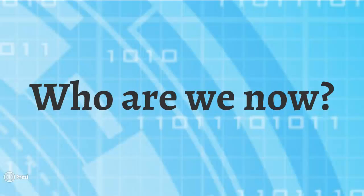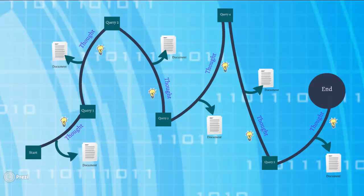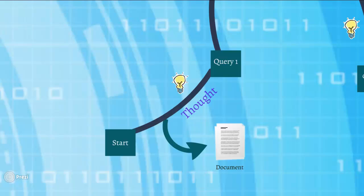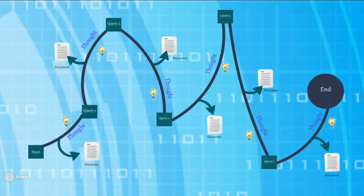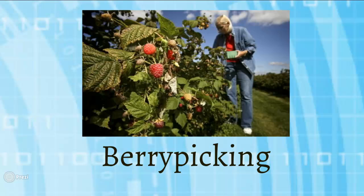So if that's who I thought we were, who are we now? I'm going to turn to Bates again, because I think her berry picking theory is a very good example of where we are now. Bates would argue that the information seeking journey isn't linear — it's actually very fluid. I think this can be a metaphor for not only search behavior, but for the entire information profession. As the user conducts queries and receives documents, they read and absorb the content, thinking critically about what they've read, and conduct follow-up queries based on the information retrieved. According to Bates, this practice resembles the act of picking berries from a bush, which often requires the user to gather berries from many bushes to fill a basket.